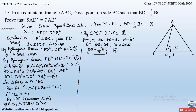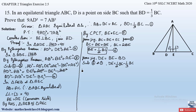From the figure, DE is equal to BE minus BD. Substituting BE equals BC/2 from equation 6 and BD equals BC/3 from equation 1, we get DE equals BC/2 minus BC/3. Taking LCM as 6: DE equals 3BC/6 minus 2BC/6, which gives DE equals BC/6. Let this be equation 7.